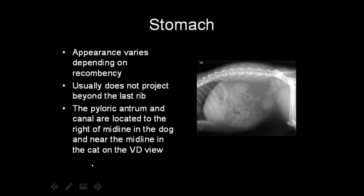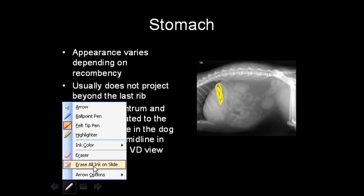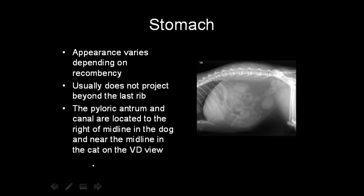In a right lateral view, most of the air goes to the left — the fundus and body of the stomach. This can sometimes be useful to identify torsion. As a rule of thumb, the stomach normally doesn't extend beyond the last rib. If the stomach does extend beyond the last rib, then it is considered dilated.